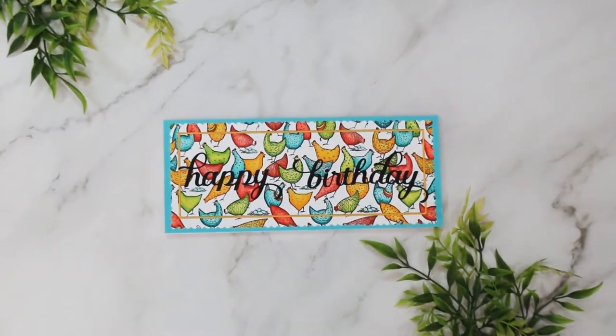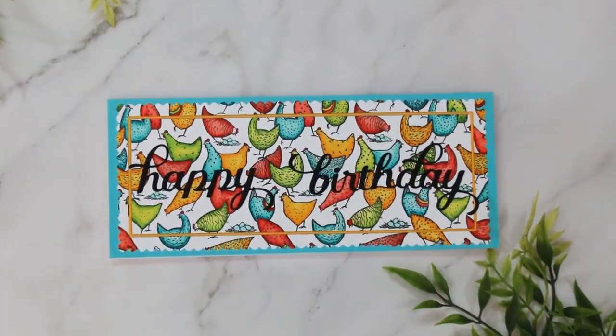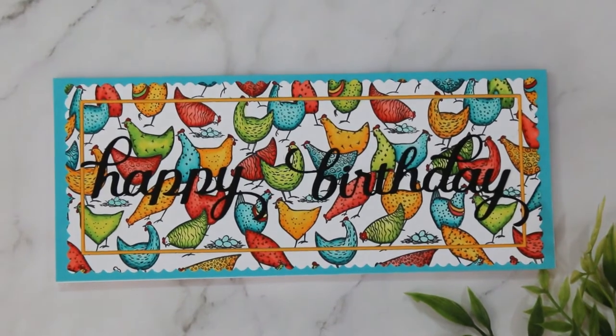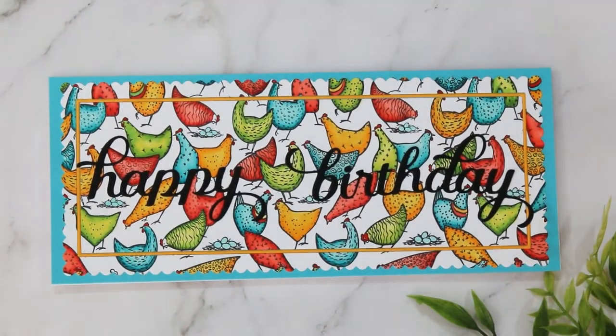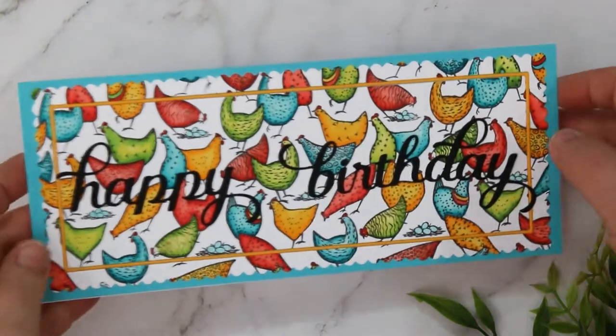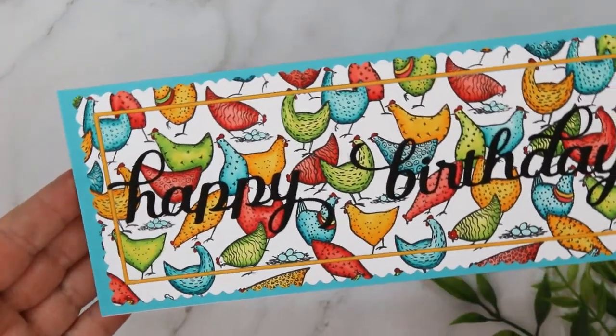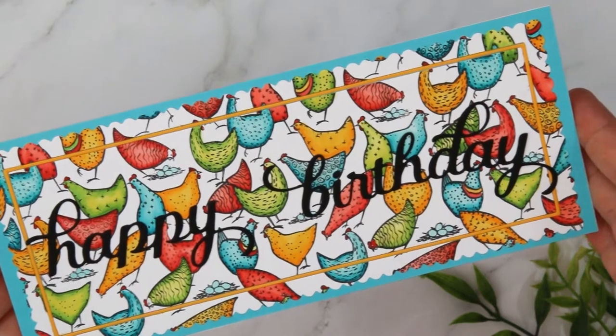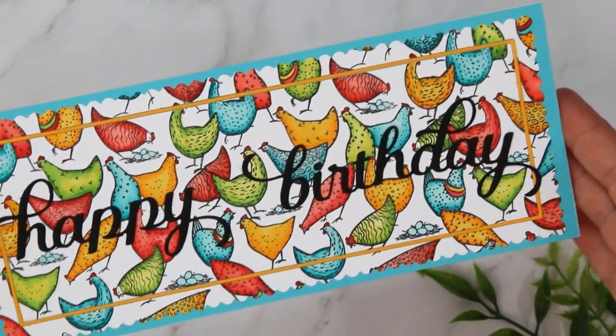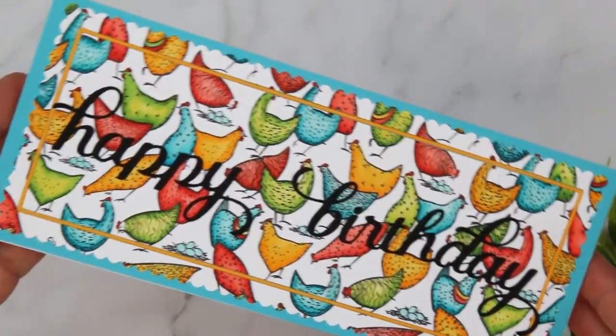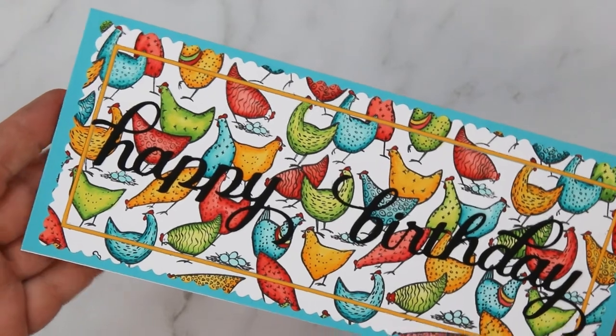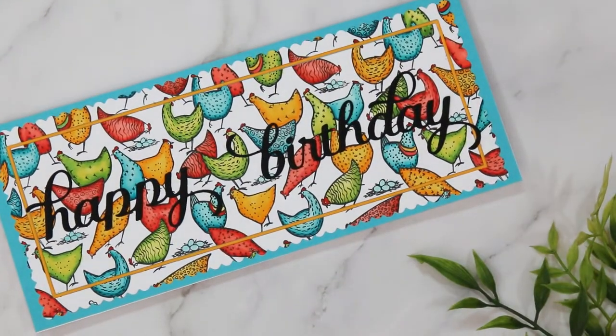So there you go, some fun new products from Picket Fence Studios along with a demonstration on how to do a simple inlaid die cut to add dimension to your card and you end up with a pretty birthday card. Isn't that nice? So all the supplies I used today are listed underneath this video. There's also a link over to my blog where you can download the free PDF file that I did for this card. And thanks for stopping in and until next time, toodles!